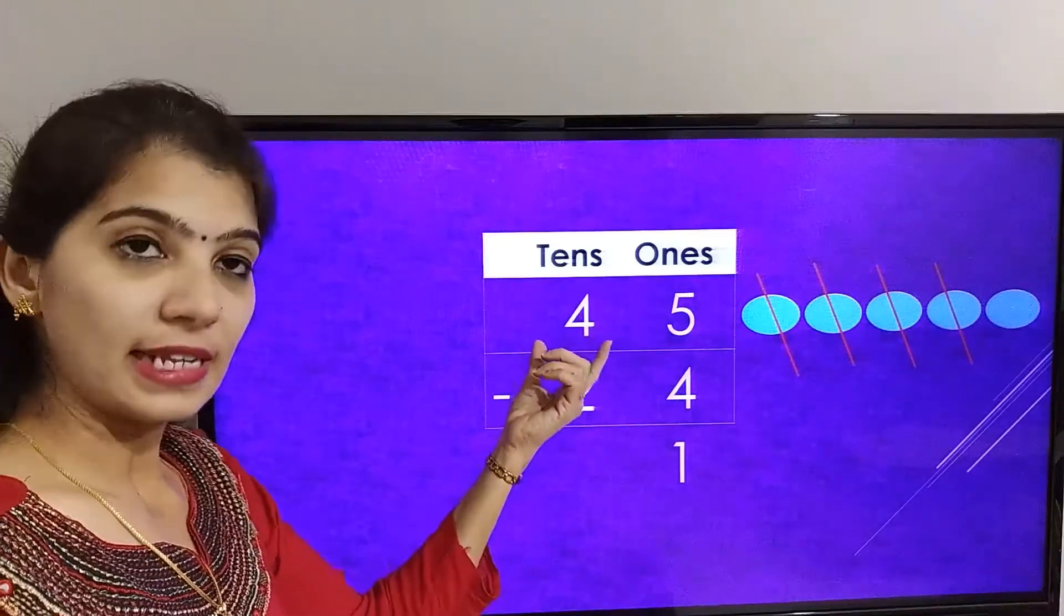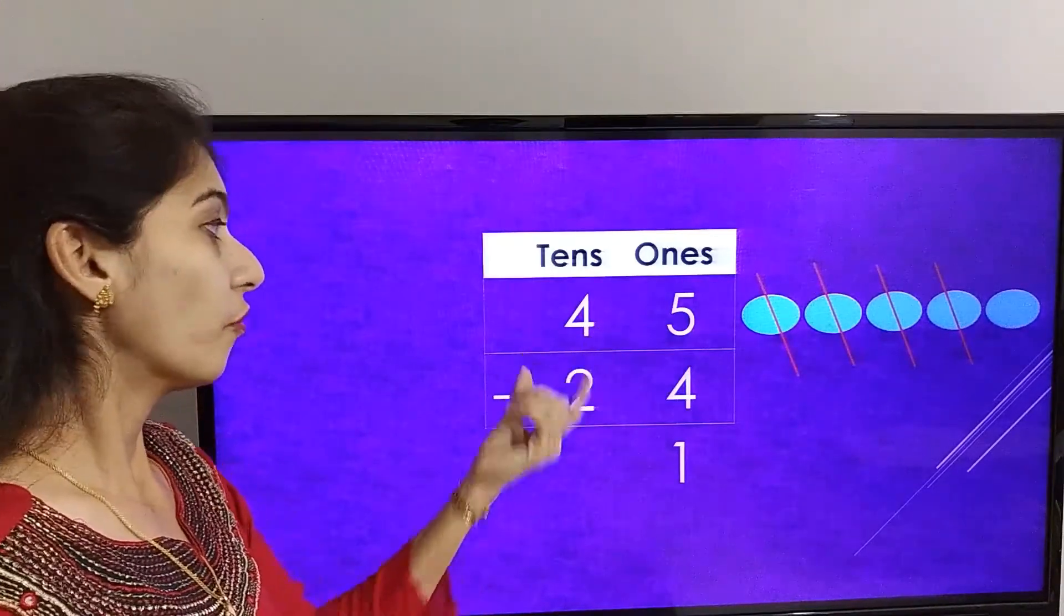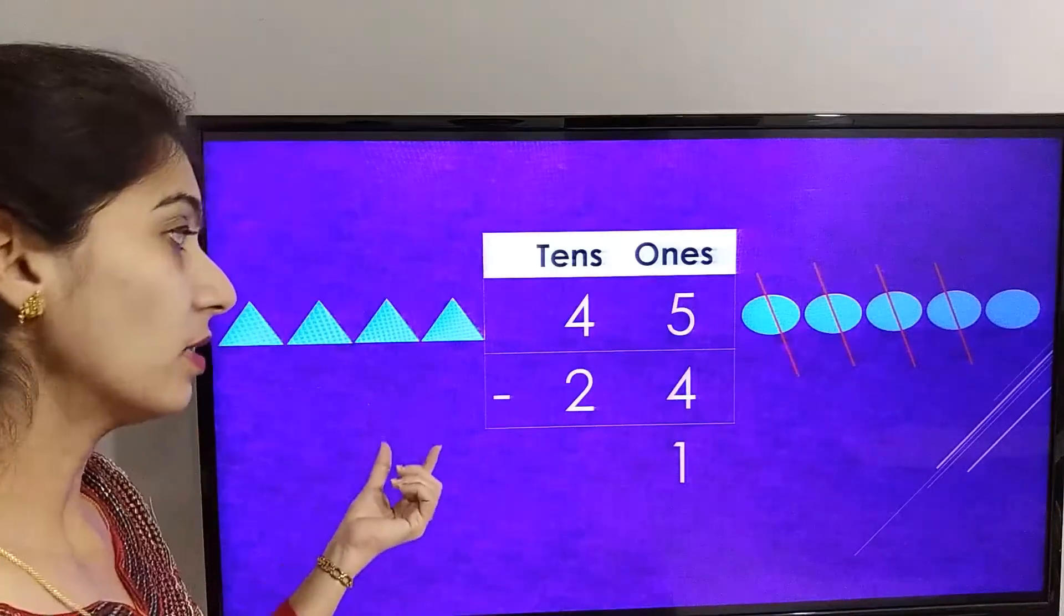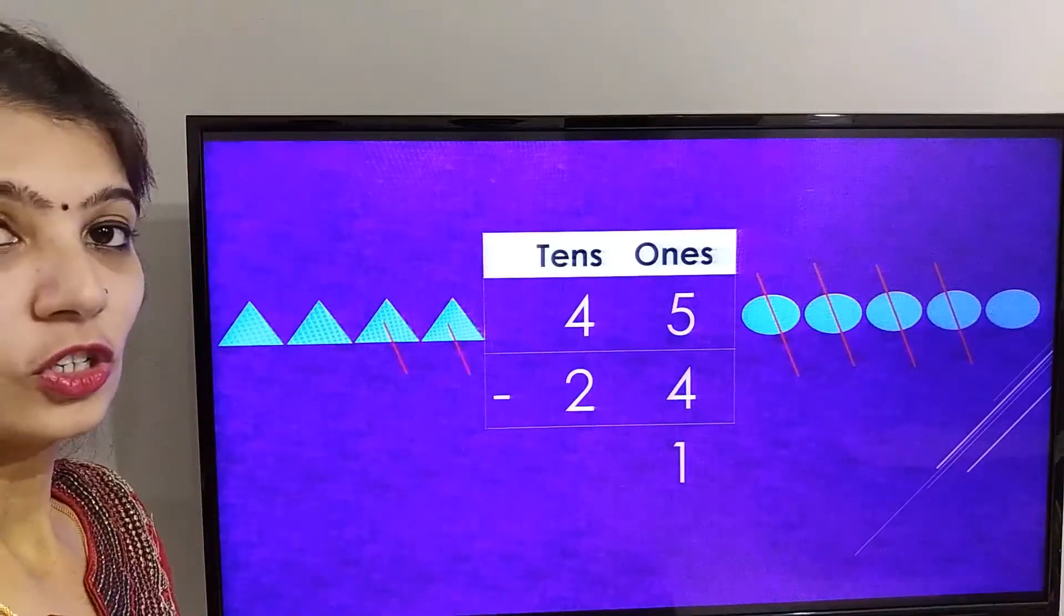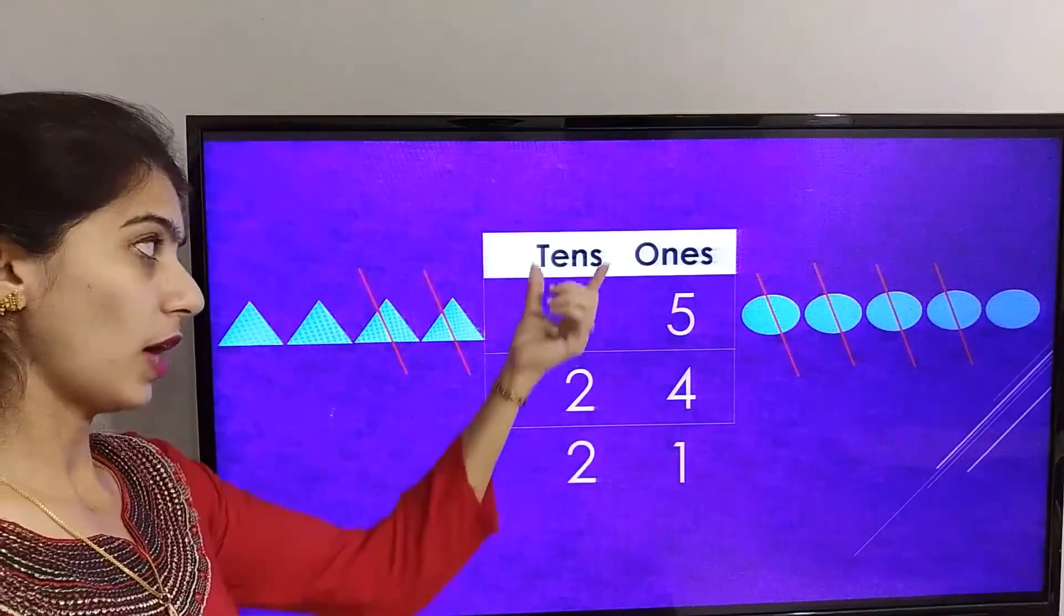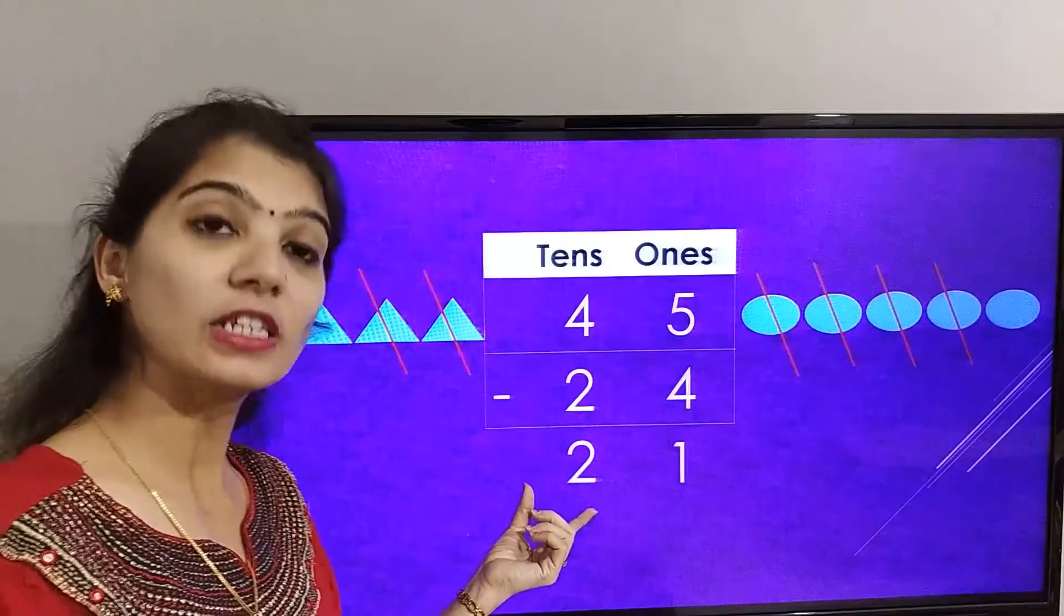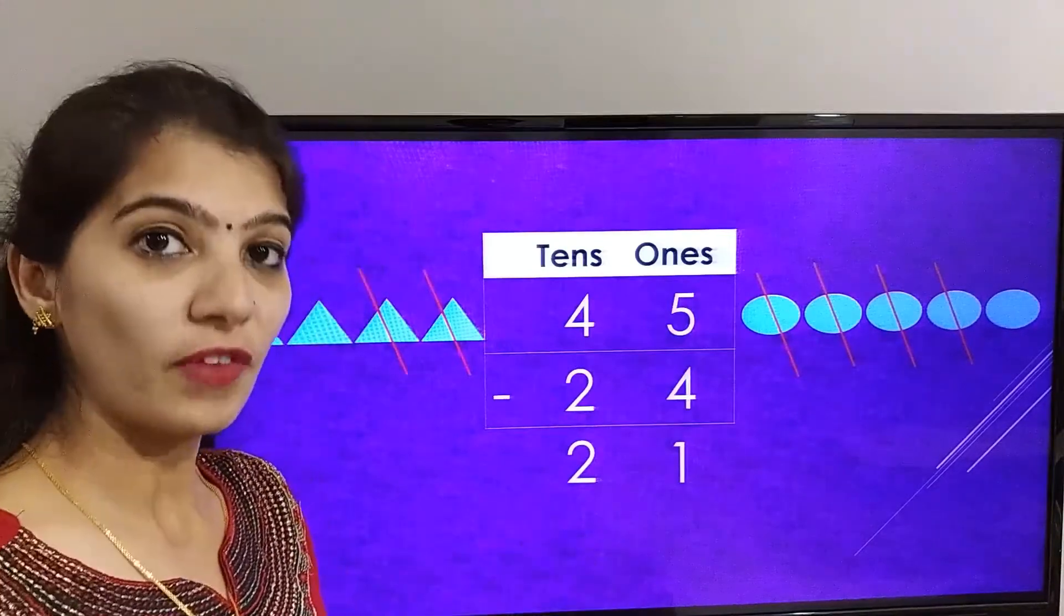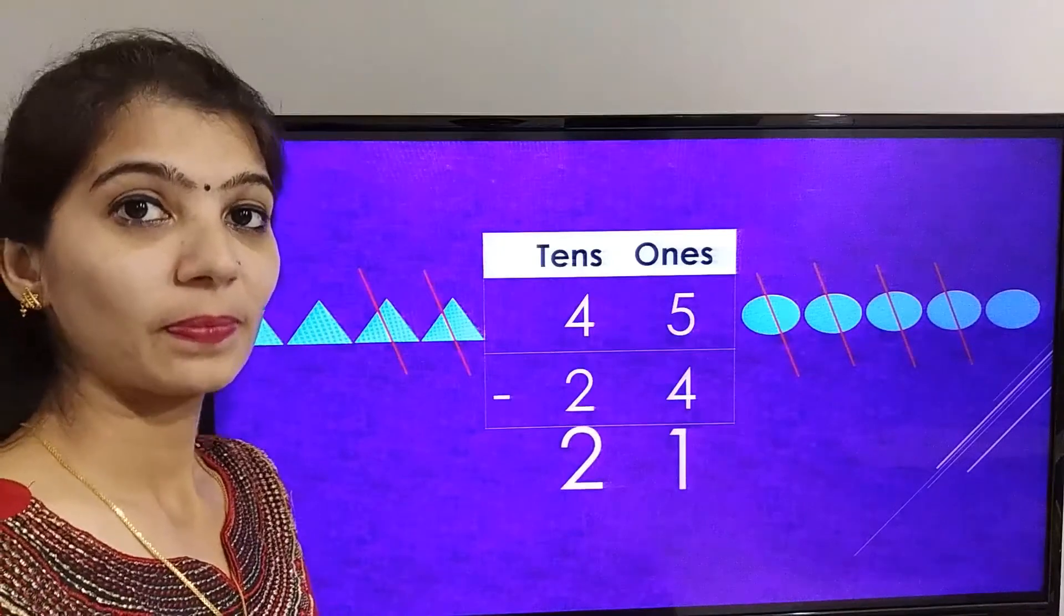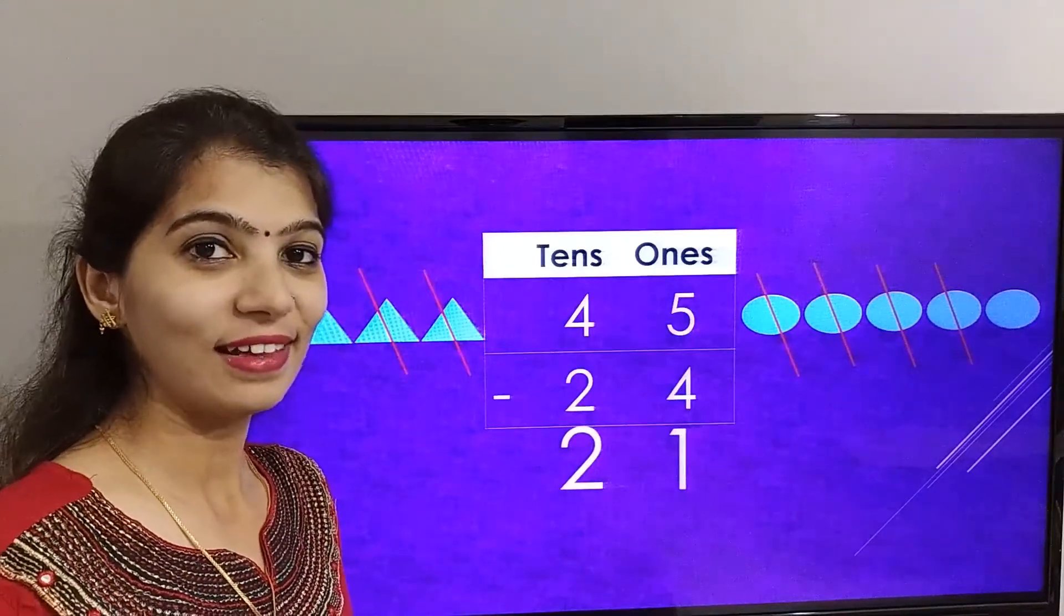The number in the tens place is 4 minus 2. Let's cut two triangles, so the remaining triangles are 2. So the answer in the tens place is 2. The final answer we got is 21. Wasn't that easy? Now let's solve one more.